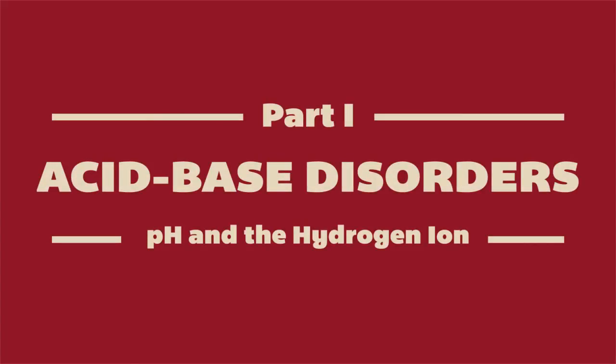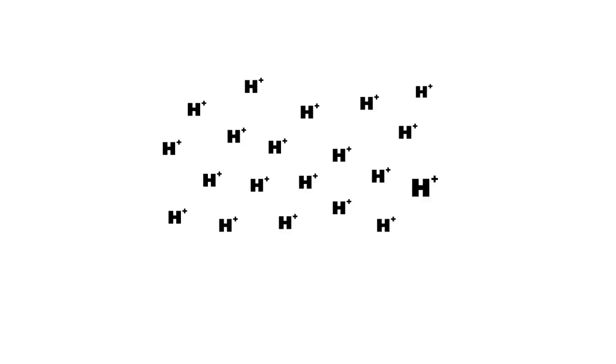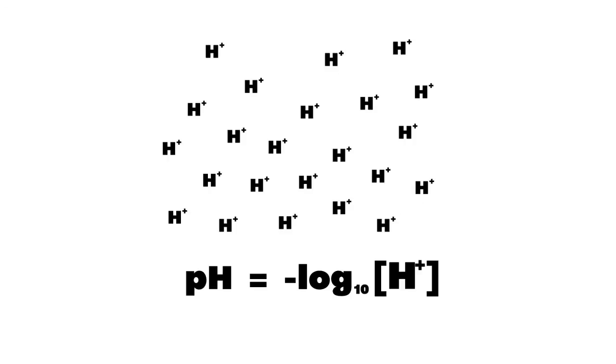When we talk about acid-base balance, we are concerned with maintaining normal hydrogen ion concentrations in bodily fluids. Because hydrogen ion concentrations in bodily fluids is so small, we express it as a logarithmic function called pH.